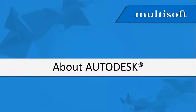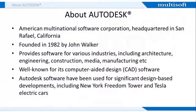Now let me tell you about Autodesk, which is a well-known software company and also the owner of Revit Architecture Software. Autodesk is an American multinational software corporation headquartered in California. It was founded in 1982 and provides software for architecture, engineering, construction, media, and manufacturing industries. The company is famous for its computer-aided design software, and Autodesk software have been used for significant design-based developments including New York Freedom Tower and Tesla electric cars.